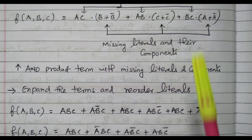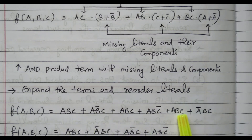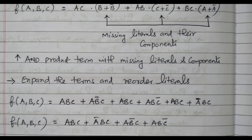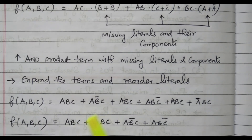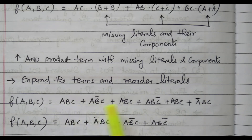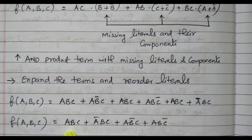ABC appears three times, so we can write it only once. The remaining terms are kept as they are: ĀBC, AB̄C, and ABC̄. So the standard SOP form is ABC + ĀBC + AB̄C + ABC̄. Now all product terms contain all the literals A, B, C — this is called a standard SOP form. Now we will go to the next example.